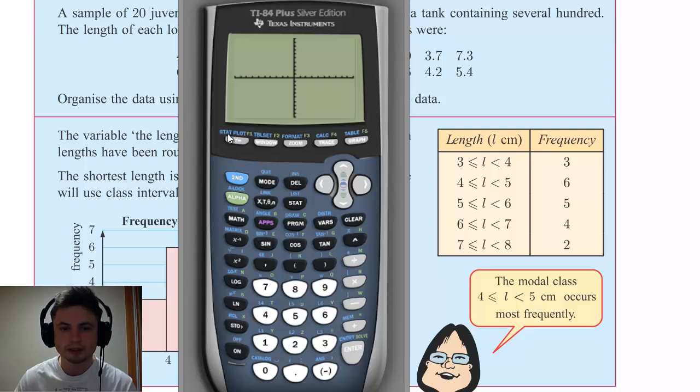What you have to do to set up the stat plot is to go into STAT PLOT. So this is second Y=, and this is we've used this button before. And basically here we're just going to click on the first one, go on the first one, turn it on. But before you quit this, you have to actually change the type.